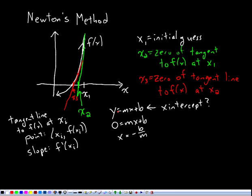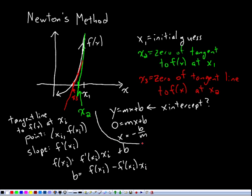So if I plug in for y, m, and x into my y equals mx plus b formula, I get that f of xi is f prime of xi times x, which is xi, plus b. Now, if I solve for b here, I get b equals f of xi minus f prime of xi times xi.